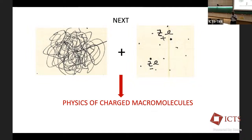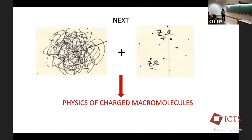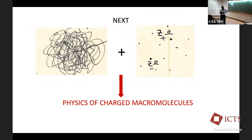I want to cater to the questions that you are probably pondering over. So what I left with yesterday was this question: I gave a brief introduction about a chaotic random coil-like polymer without explicitly addressing the role of charges on them. And if this polymer were to be a neutral, uncharged polymer, what kind of structure and shape it might adopt.